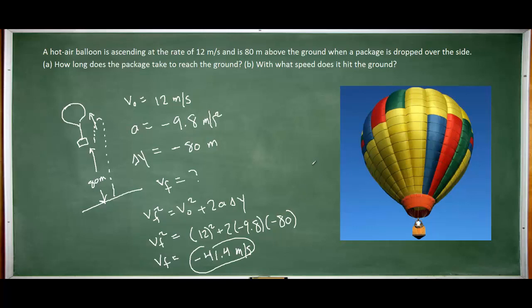Now that's the answer to part B. Strictly speaking, part B is only asking for the speed, so the final answer would be 41.4 meters per second. Speed is not a vector quantity, so we don't include the negative sign indicating direction. We just use the positive answer.